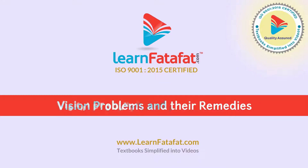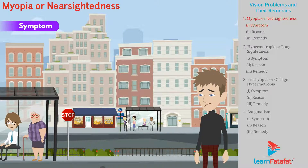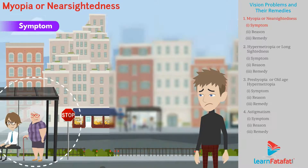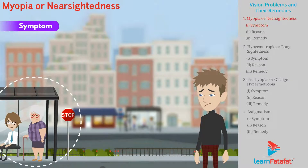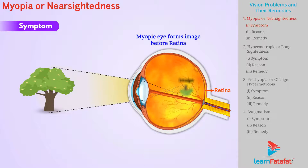Vision problems and their remedies. Myopia or nearsightedness: a person with this defect can see nearby objects clearly but can't see distant objects clearly. A myopic eye forms an image before the retina.